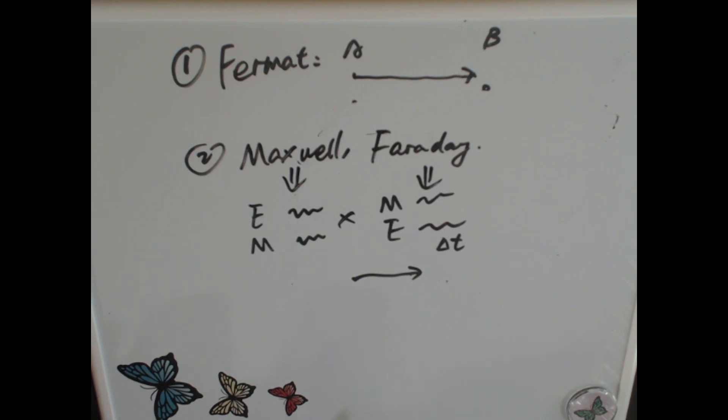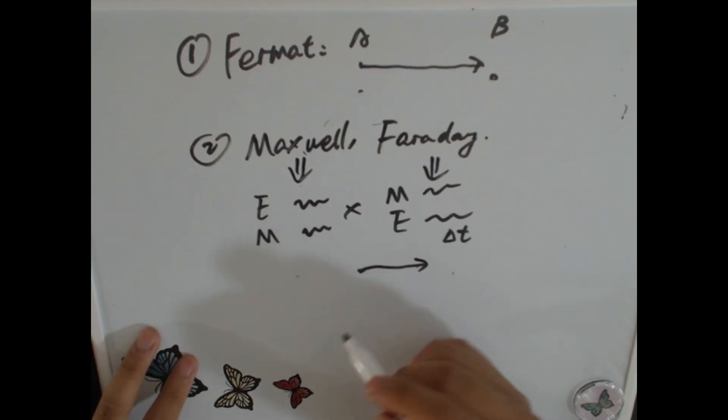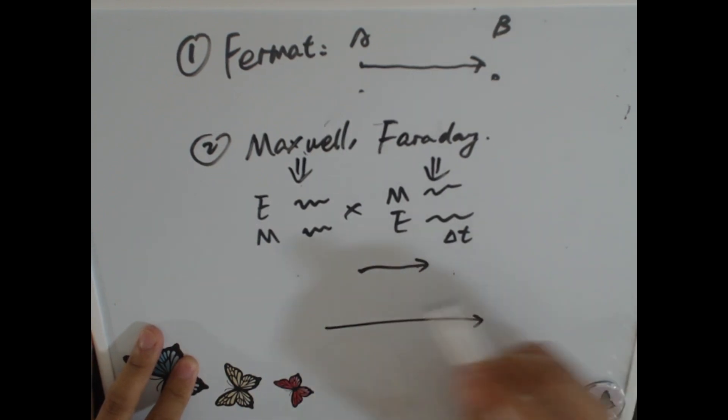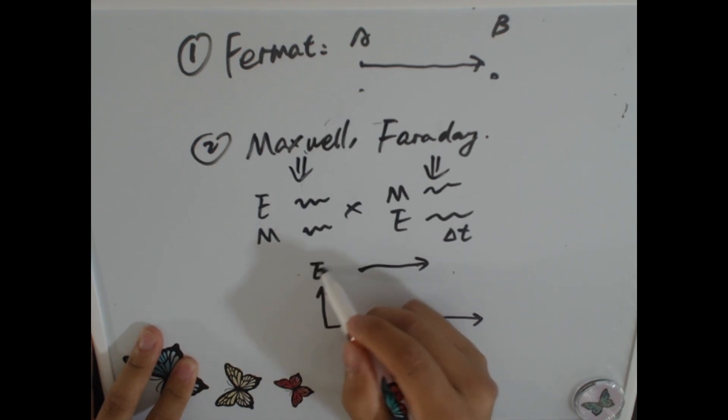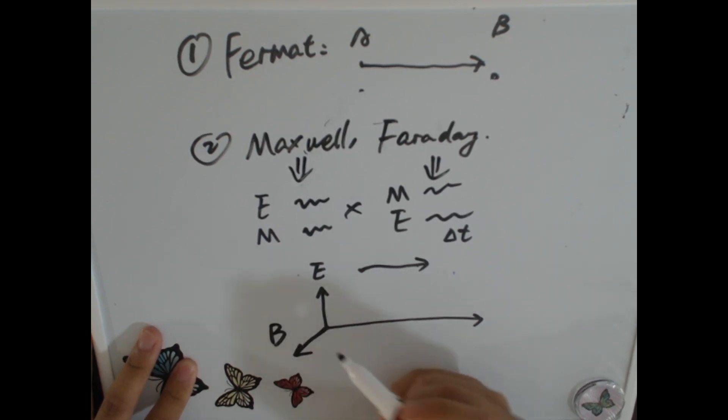So how can we draw this and visualize it, right? So here is how we do it. Let's say this is the direction of light propagation and this is the direction of electric field and this is the magnetic field. They are always perpendicular to each other, right?